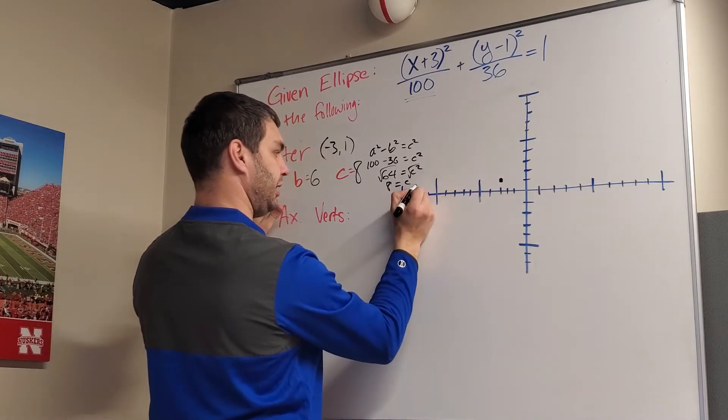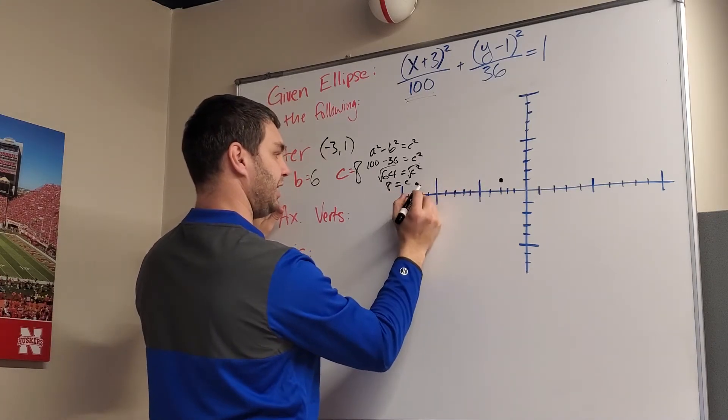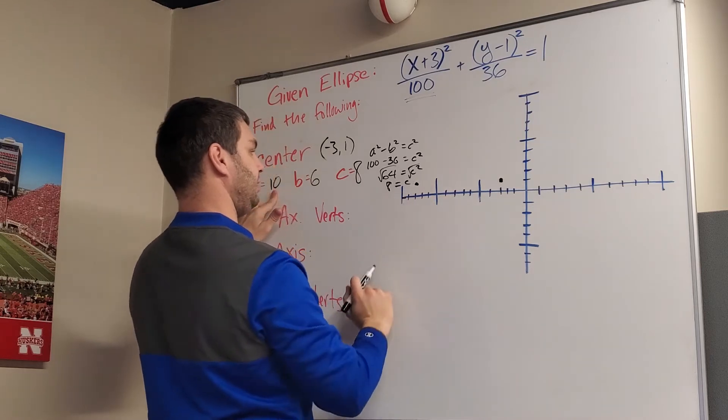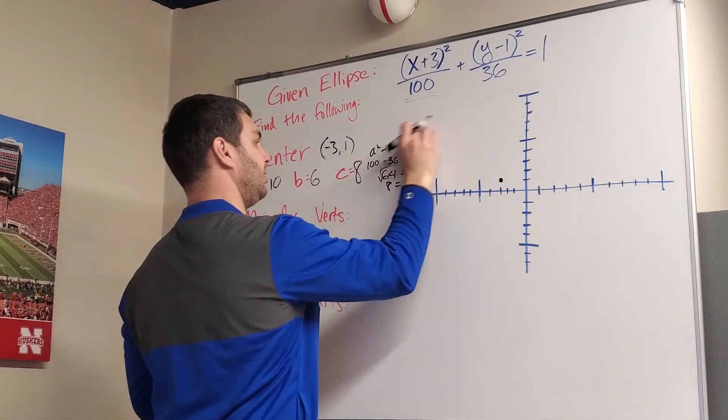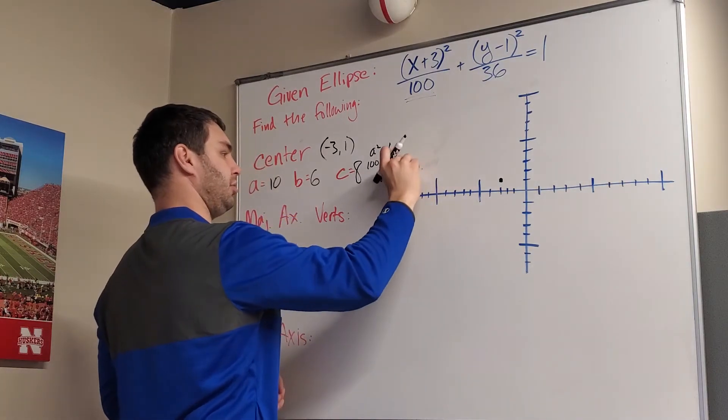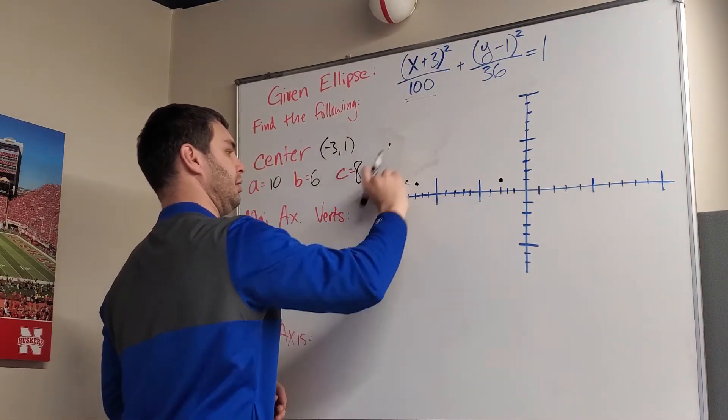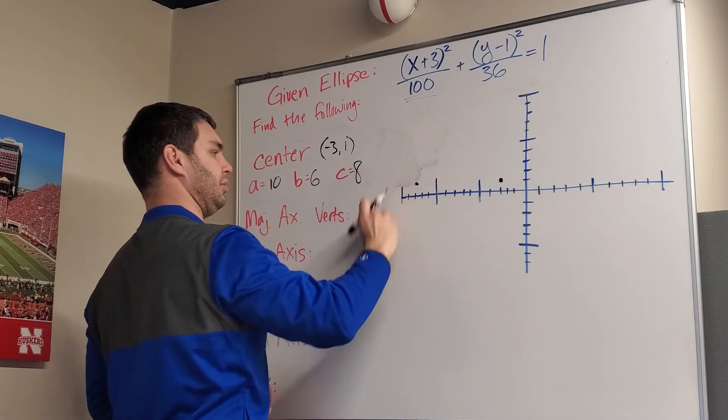So if I go 10 this way, that's going to put me at (-13). Let's see. We already found c, so I might just erase that so I have some room here. Working on a little bit of a smaller board. A little bit gross.